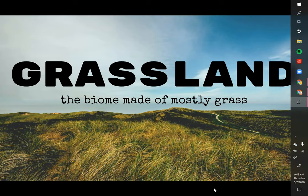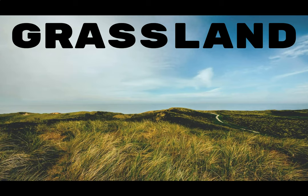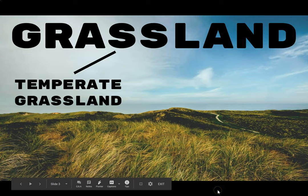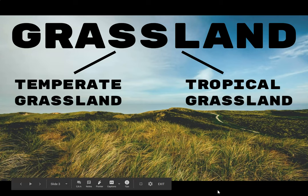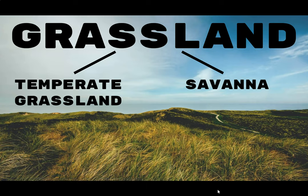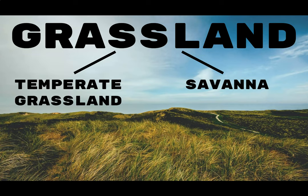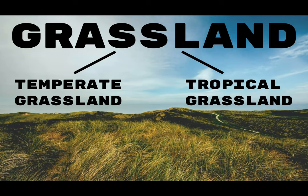Obviously the main thing about a grassland is that it's mostly grass. A grassland can be split into two categories: either a temperate grassland or a tropical grassland. Another way to say tropical grassland is the savannah. When I say grassland, I'm mostly referring to the temperate grassland, and when I say savannah, I'm referring to the tropical grassland.